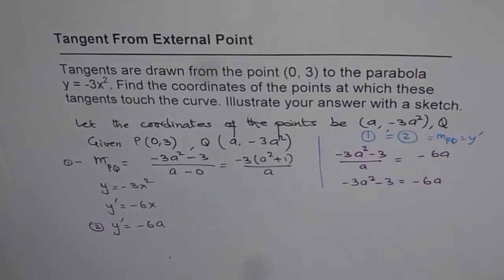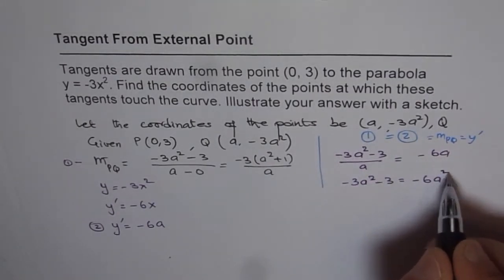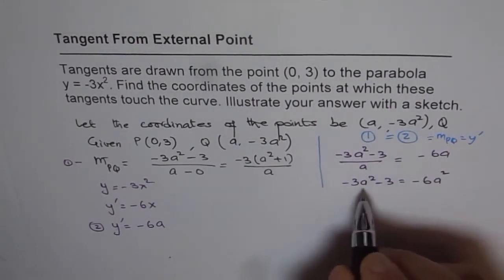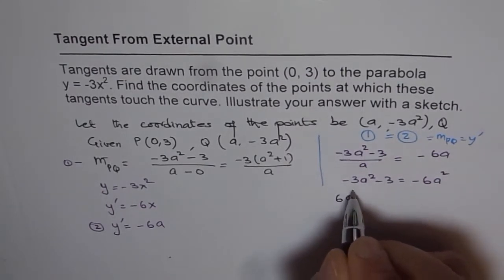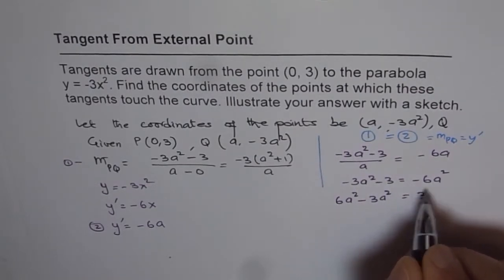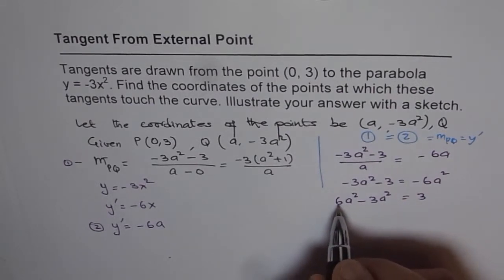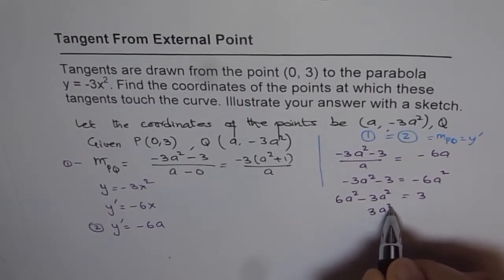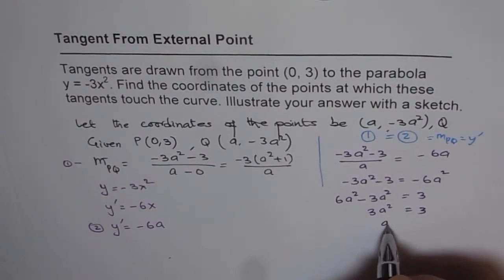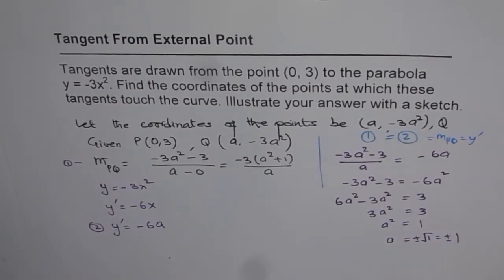We are equating them because they are the same slope at the same point. Cross multiplying, we get minus 3a squared minus 3 equals minus 6a. Bringing like terms together: 6a squared minus 3a squared gives 3a squared equals 3, or a squared equals 1, or a equals plus or minus the square root of 1, which is plus or minus 1.